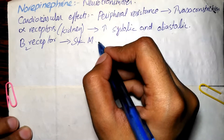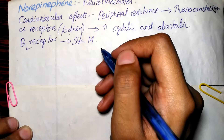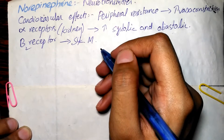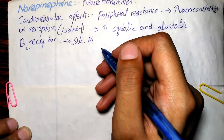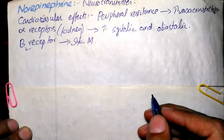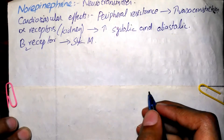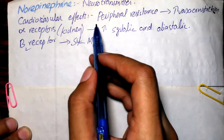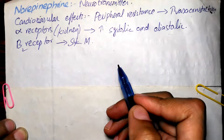The weak beta-2 activity of norepinephrine also explains why it is not useful in treatment of asthma and anaphylaxis. Unlike epinephrine, which has beta-2 activity causing bronchodilation and inhibition of histamine release from mast cells, norepinephrine does not cause bronchodilation or inhibit histamine release, so it cannot be used to treat asthma or anaphylaxis.